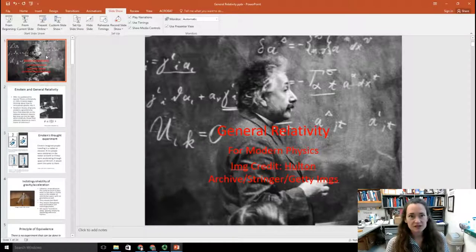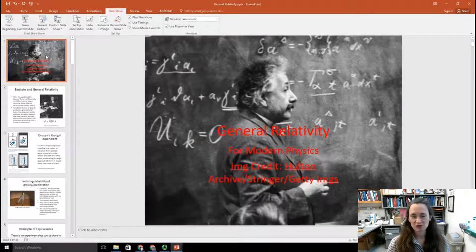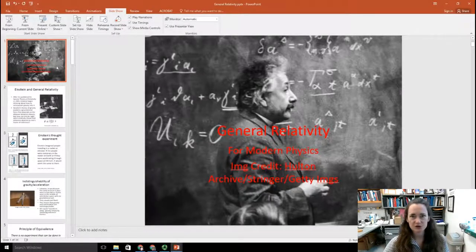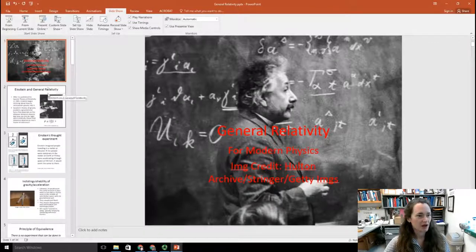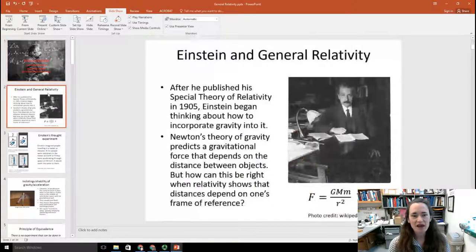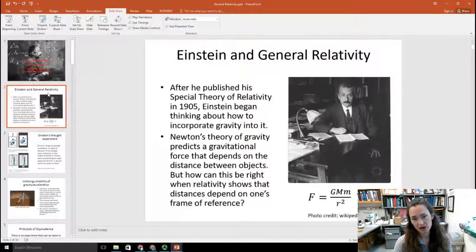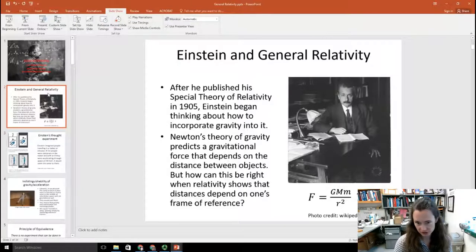General Relativity. This is the guy that we have to thank or curse, depending on your perspective, for General Relativity: Albert Einstein. Known and loved. Where would physics be without him? Probably at least a few years behind where we are now. After he published his Special Theory of Relativity in 1905, Einstein immediately began thinking about how to incorporate gravity into it.